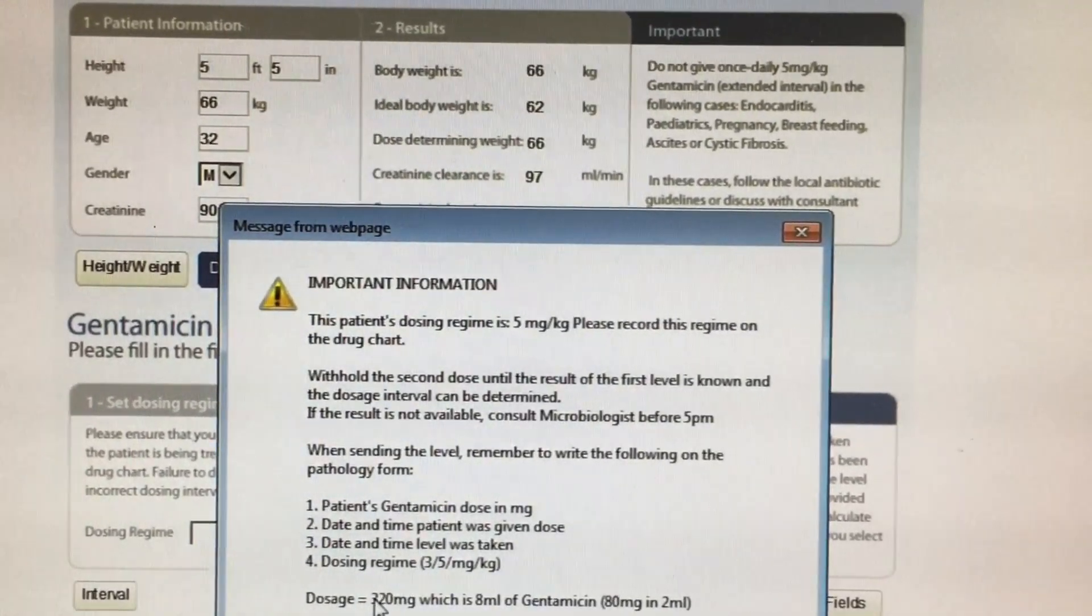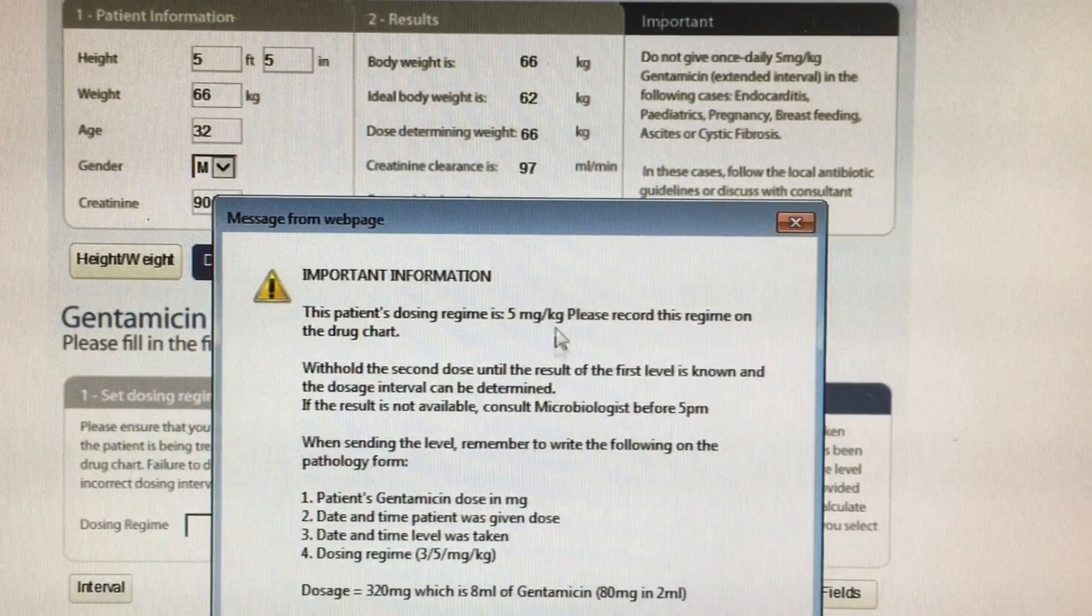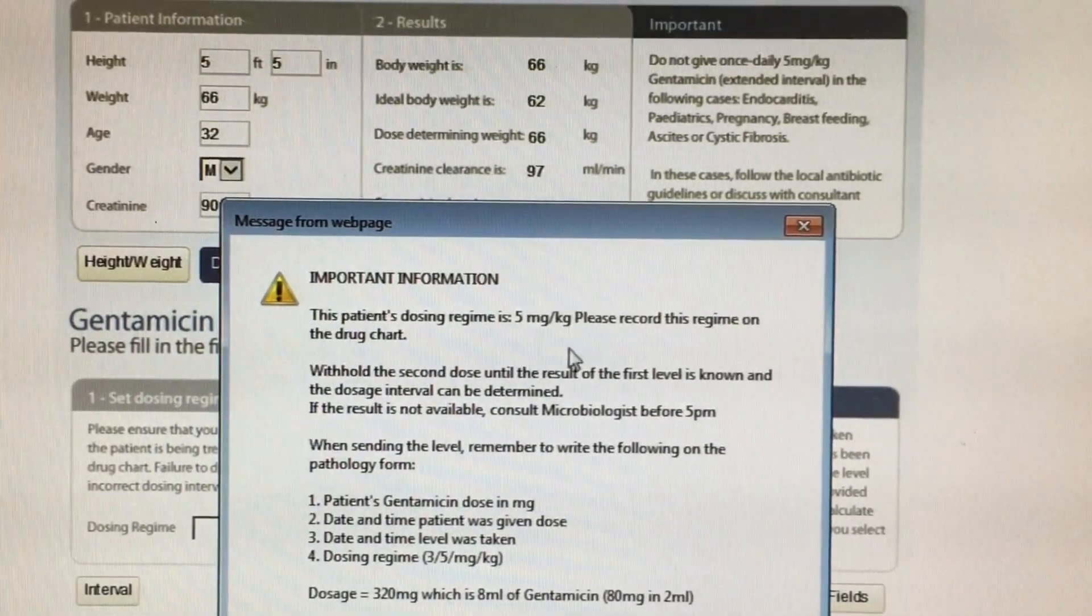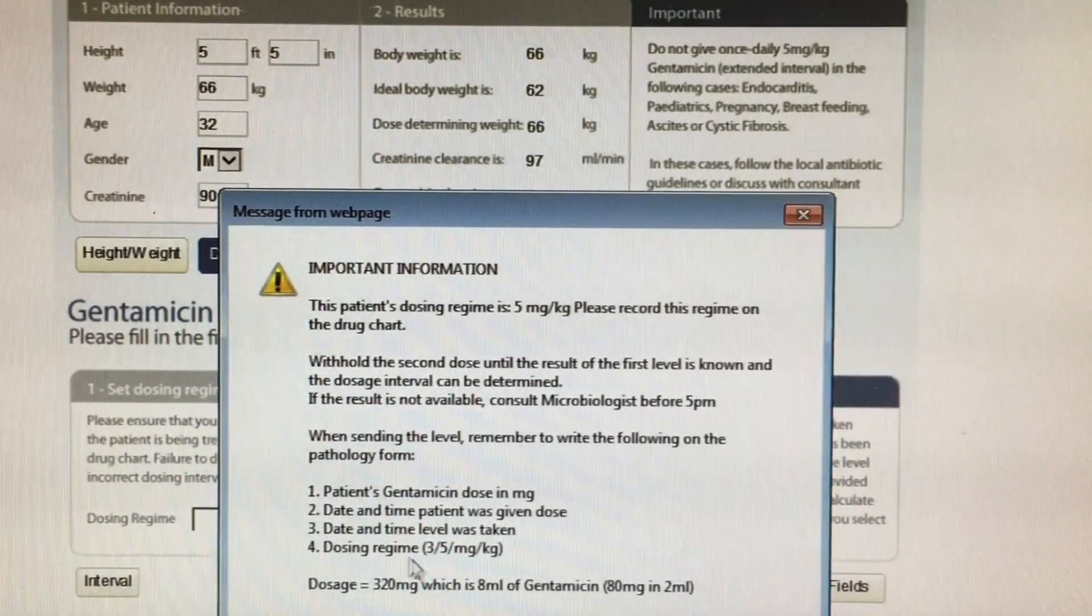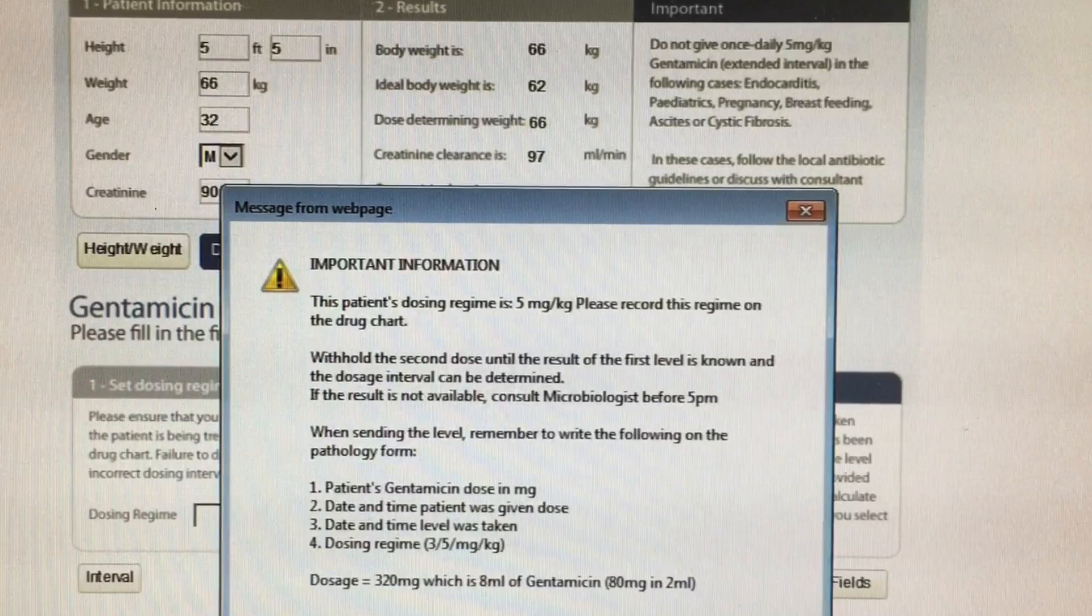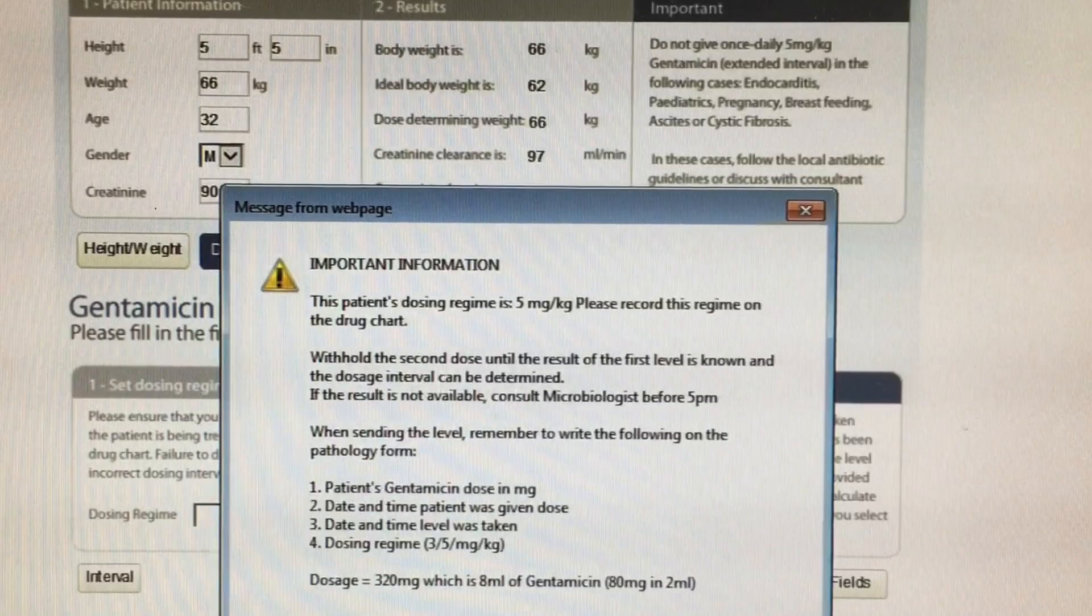Click on the dose, and as you will see here, there's two important numbers. There's the dosage at the bottom, so how much they will get each time, 320 milligrams. And the dosing regimen, which is 5 milligrams per kilogram. So, now you can circle that on the drug chart, and you know how much to give them.